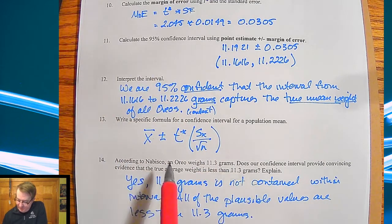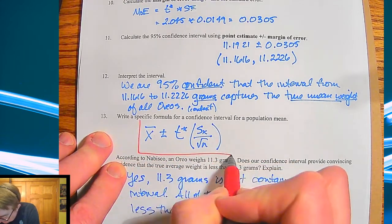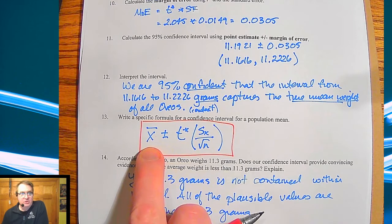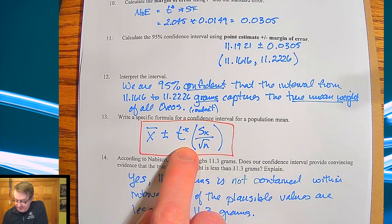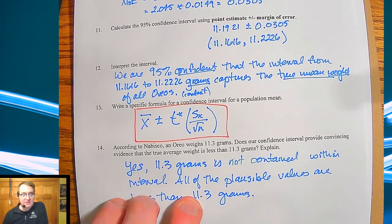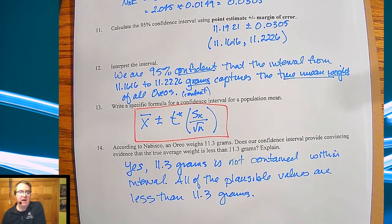So the specific formula for confidence intervals is going to be x bar which is our point estimate plus or minus our margin of error.